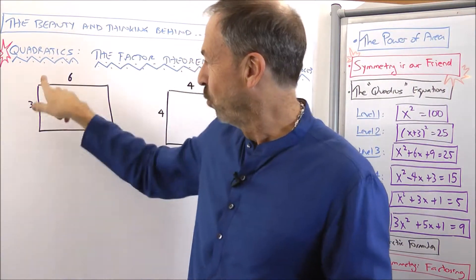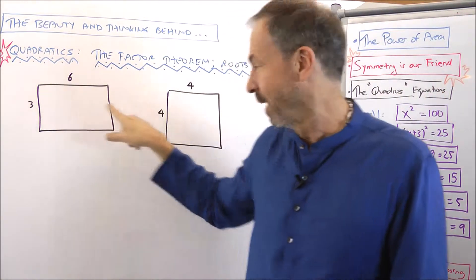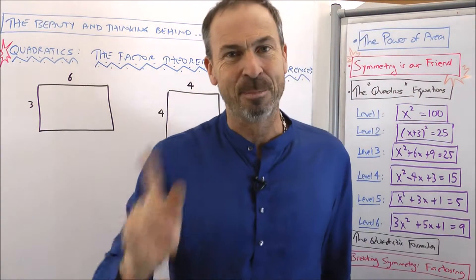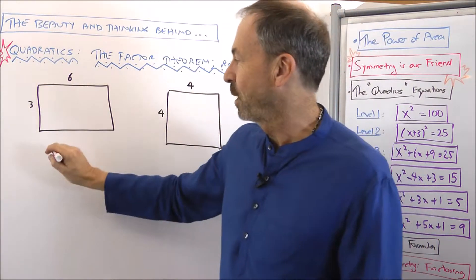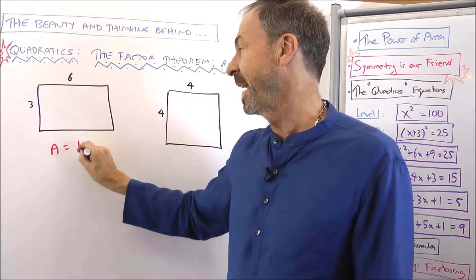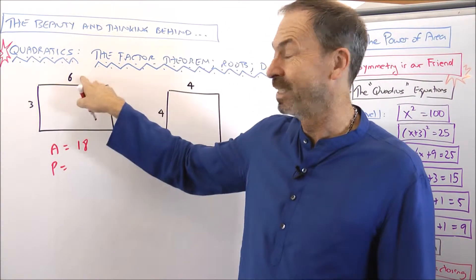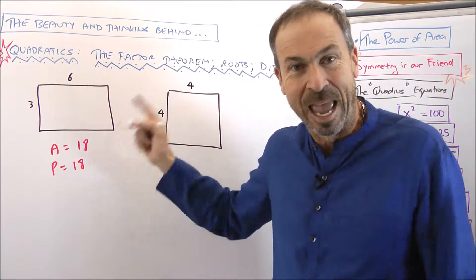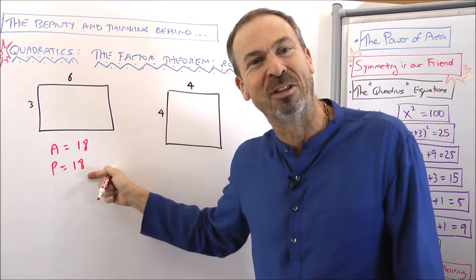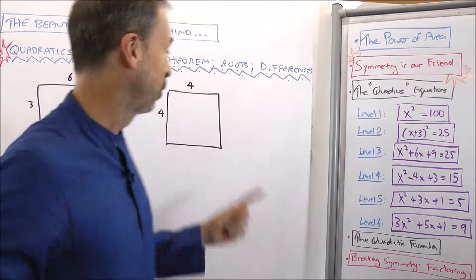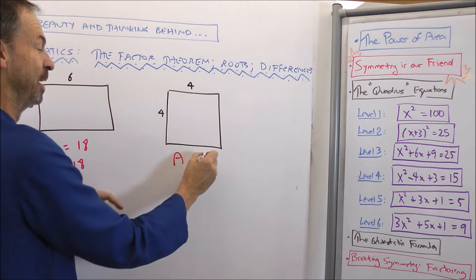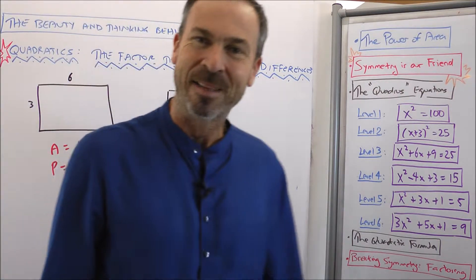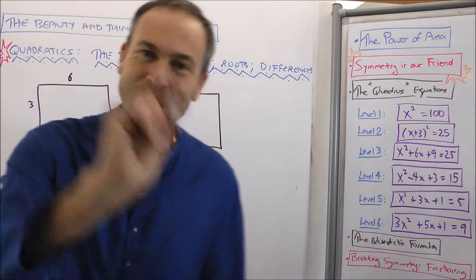Alright, to start us off here's a puzzle. I've drawn a three by six rectangle and a four by four square with integer side lengths. These rectangles have a very nice property. The area of this three by six rectangle is 18 units squared and the perimeter is also 18 units. The four by four square has area 16 units squared and perimeter 16 units. The area and the perimeter have the same numerical value. So here's my puzzle for you.